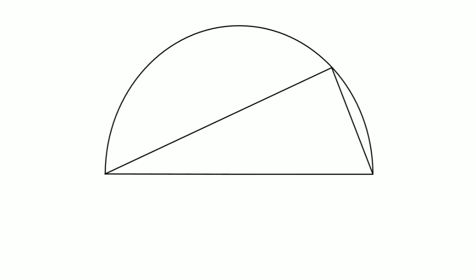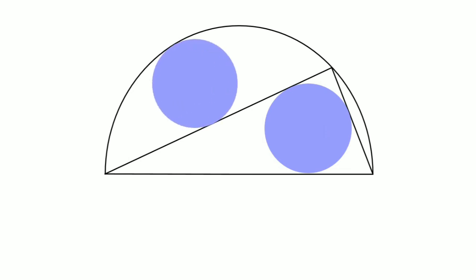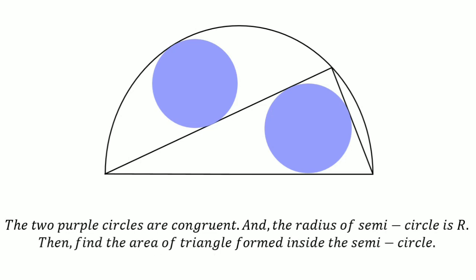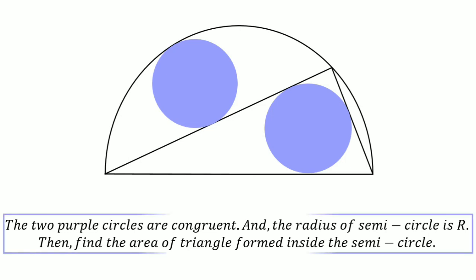Hi everybody. Suppose that we have a semicircle and inside of that we inscribe a triangle that is touching the arc of the semicircle. Inside of the triangle we inscribe a circle, and on another side we inscribe another circle that is tangent to one line of the triangle and the arc of the semicircle. Now if two purple triangles are congruent and the radius of the semicircle is capital R, then find the area of the triangle formed inside the semicircle. Please give your trial to this question and keep watching for the solution.